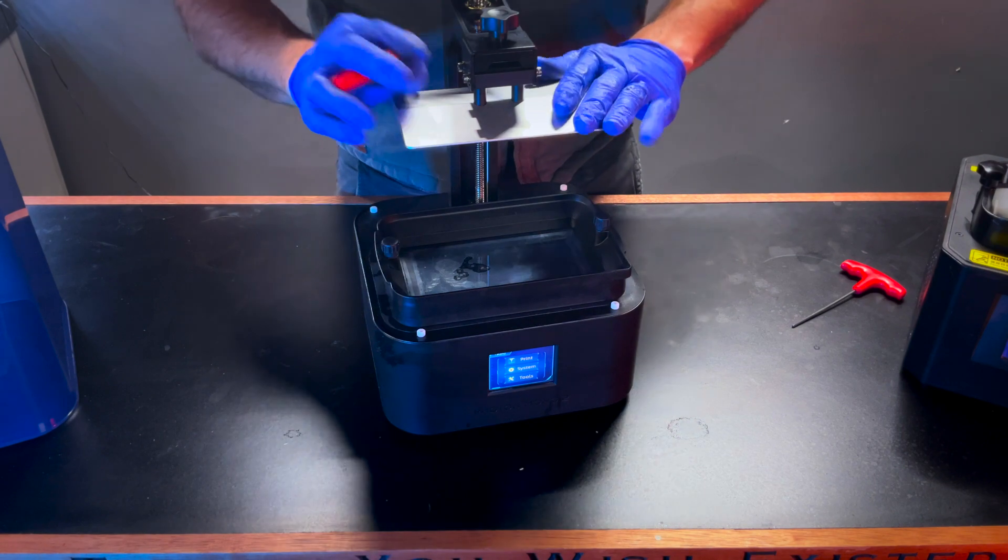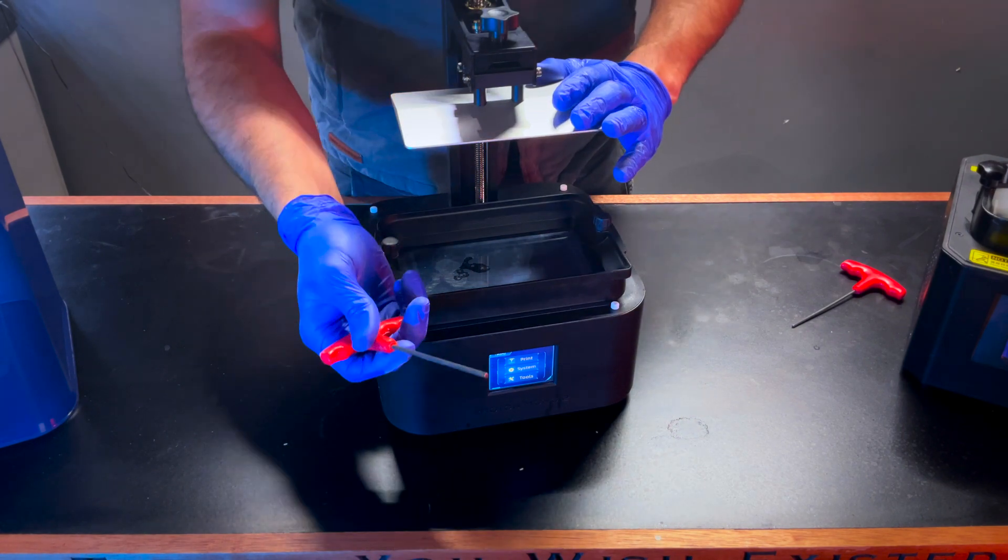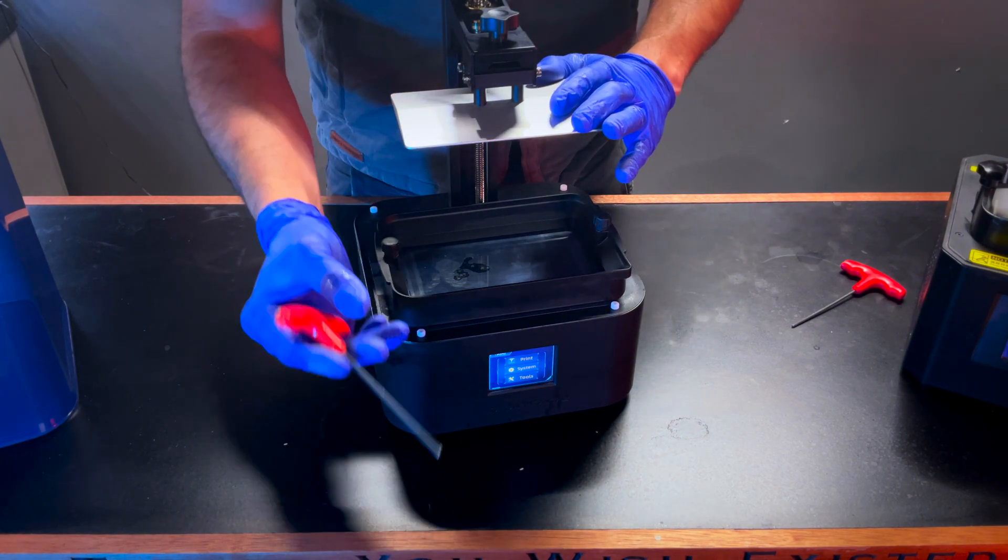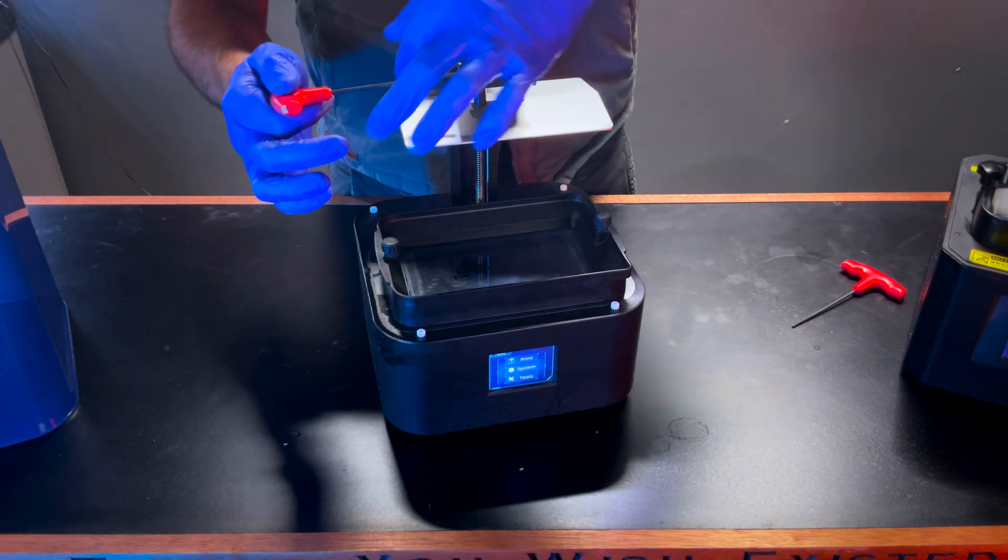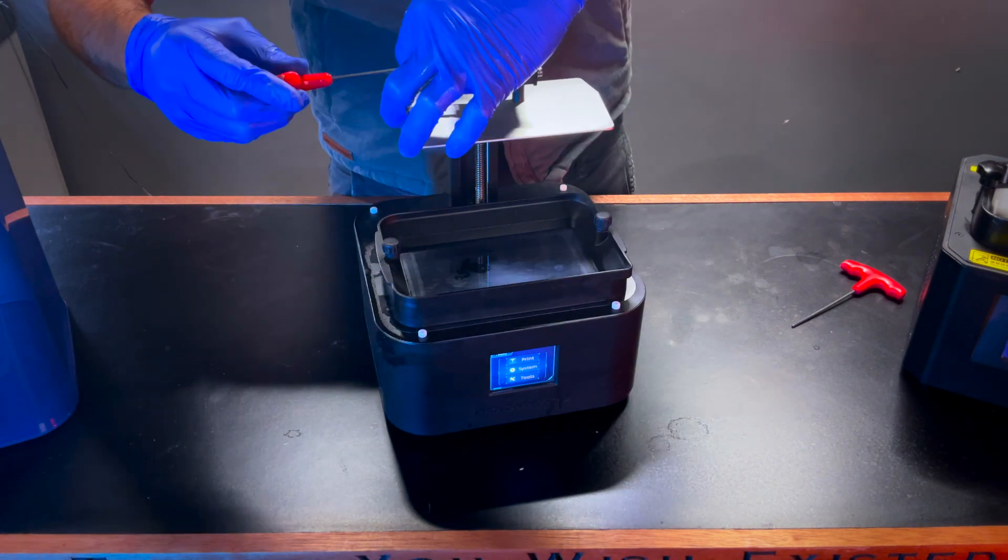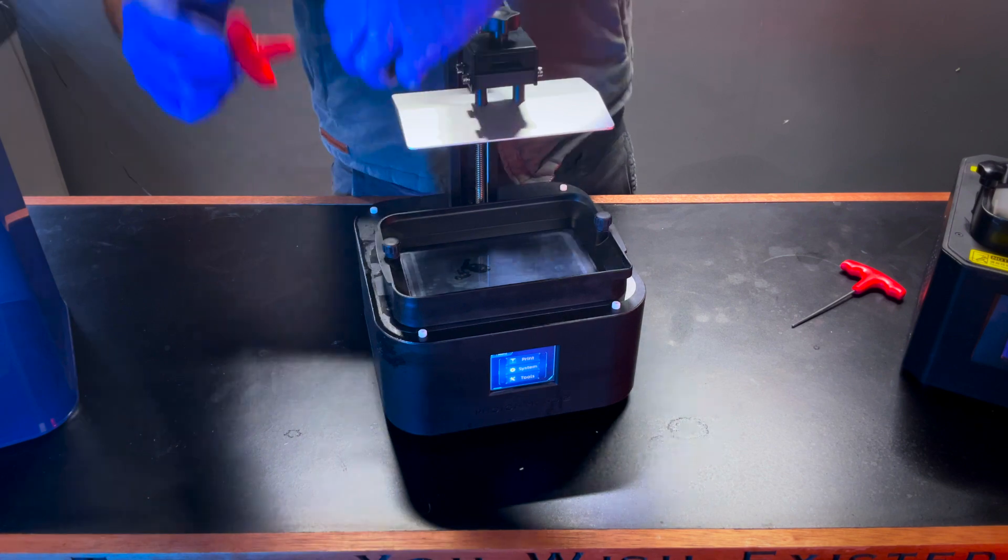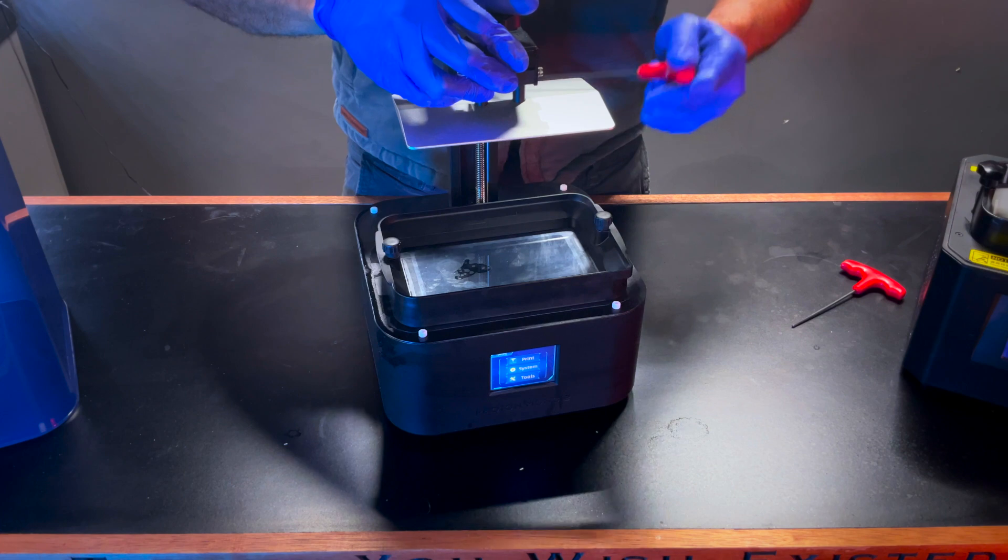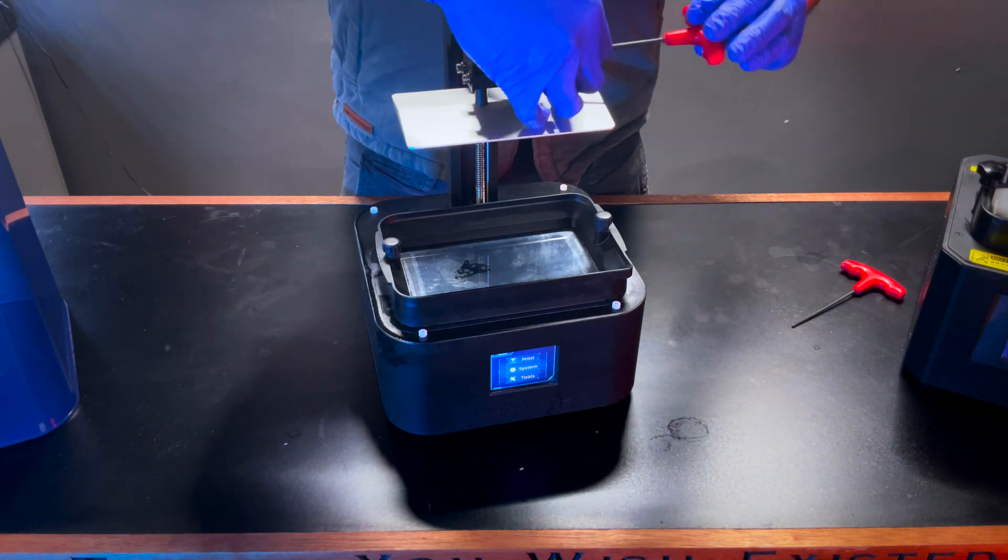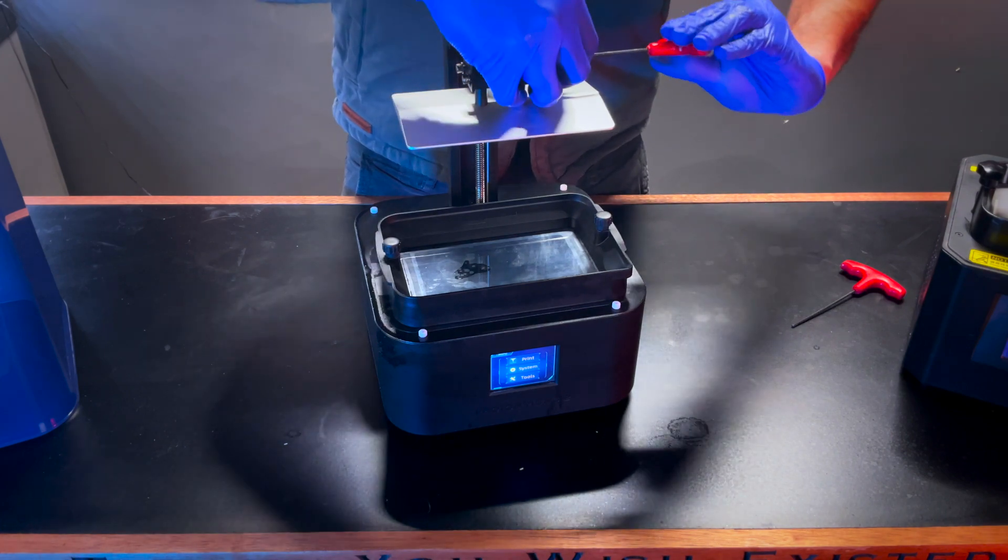And then your 3D printer will come with the correct size Allen key. I just so happen to like these long handled ones better. What you want to do is loosen these four screws around your build plate. Of the three or four resin printers I've owned, all have been this style.